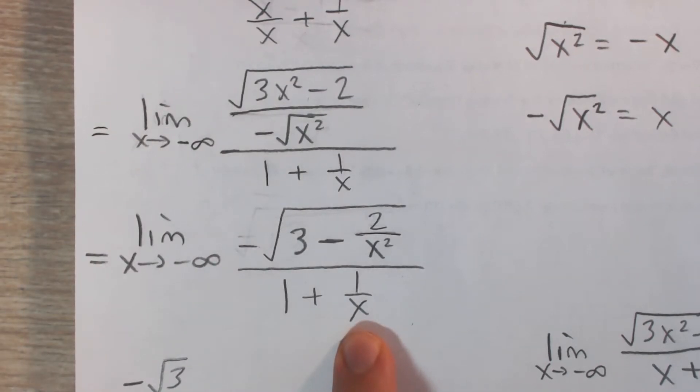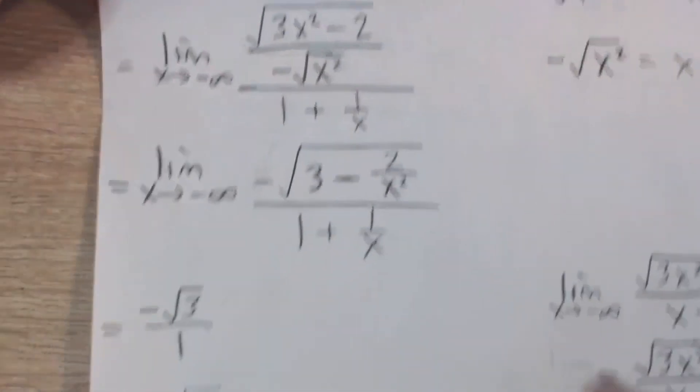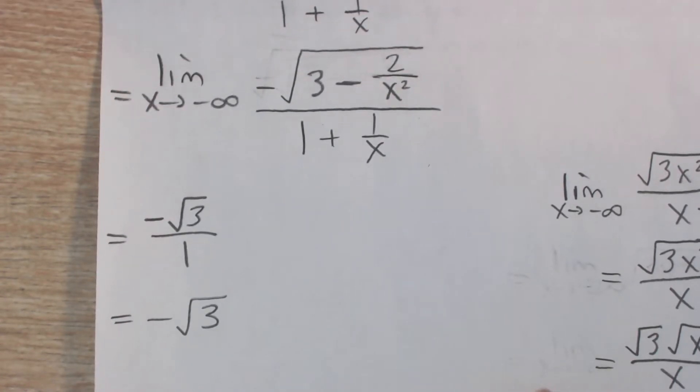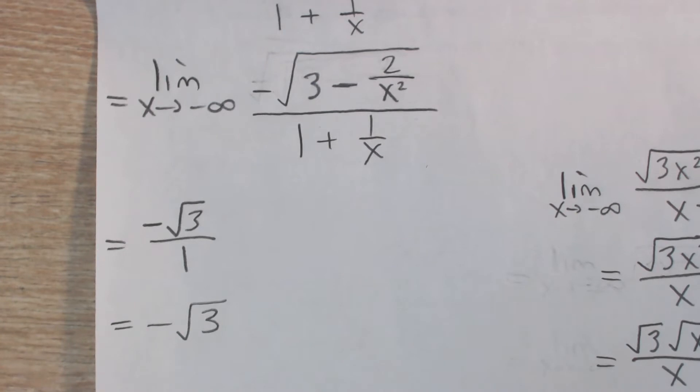1 over x is also going to approach 0. Say x is negative 1,000. 1 over negative 1,000 is a very small negative number. It's approaching 0 as well. And so all we're left with is negative square root 3 divided by 1, right? This 1 still stays. And so in other words, our final answer is negative square root 3.